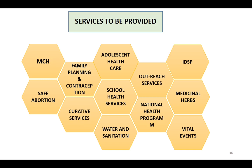All national health programs are included at the sub-center level. For IDSP, Form S is available at the sub-center. Medicinal herbs plantation is also included. Vital events — morbidity and mortality records of particular diseases — are maintained. Regarding manpower: for Type B sub-centers (where deliveries are conducted), two ANMs are required; one male health worker may or may not be required; and a safai karmachari — one full-time for Type B and part-time for Type A.